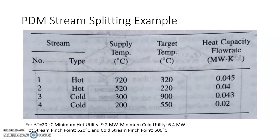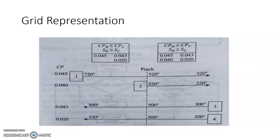PTA gives you one pinch point. You add ΔT_min/2 for the hot stream pinch and subtract ΔT_min/2 for the cold stream, so that at the pinch point hot and cold streams are exactly ΔT_min apart — as seen in the grid diagram, where the hot side is 520°C and cold side is 500°C, always maintaining ΔT_min = 20°C.